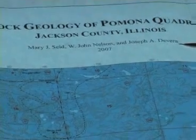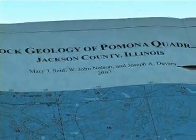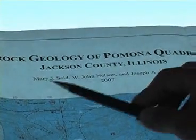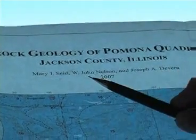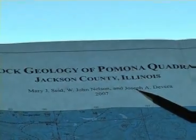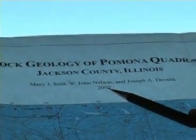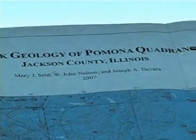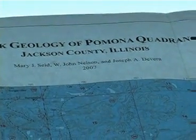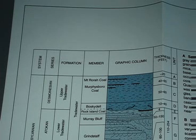This area on the map, up by the title, shows who has done the work on the map. I get to put my name on it, and John Nelson and Joe DeVera helped me out. We made the map in 2007 — that's the part that makes me the most proud, that I get to put my name on this map. If you want to get into more detail, you come to the second page of the map and look at the graphic column.